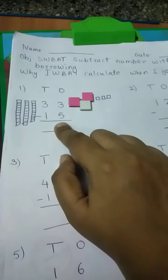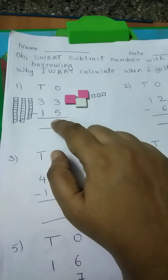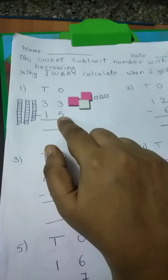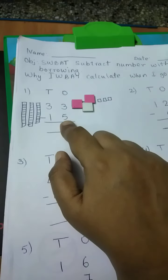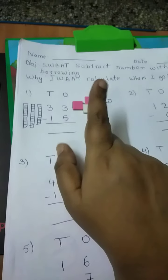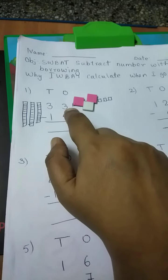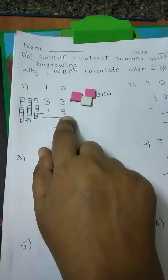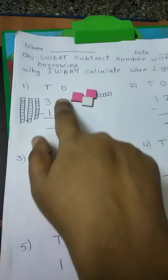Now we have to do 33 minus 15. So I have written 33 as tens and ones and we are going to minus 15 from this. 33 is more than 15, but when we look at the ones place, we have to subtract 5 from 3. But is that possible? Can we subtract 5 from 3? No.